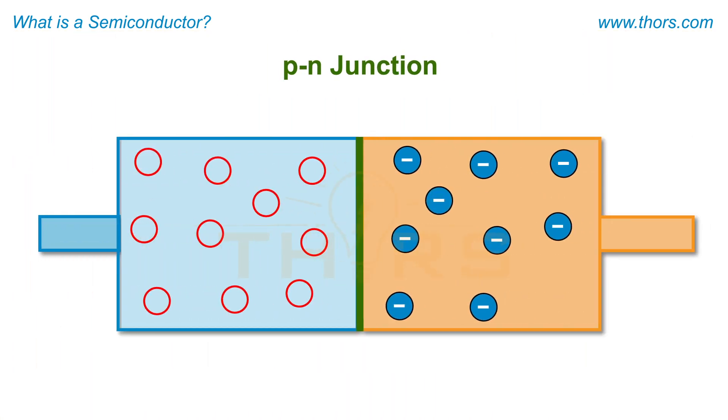A p-n junction is formed at the intersection of a semiconductor that is side by side doped with p-type and n-type dopants.